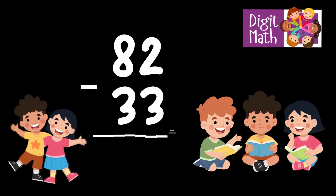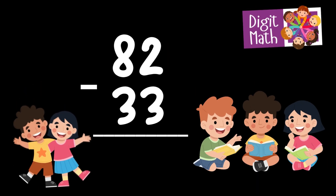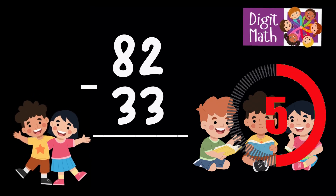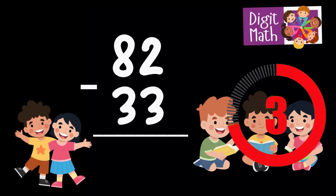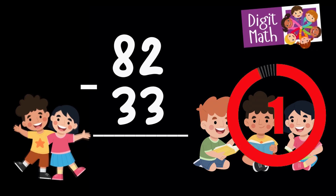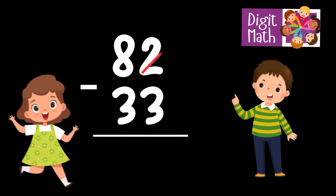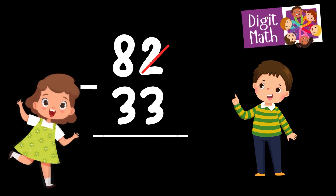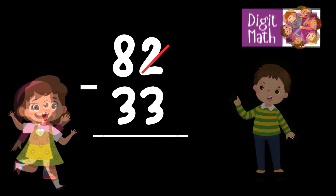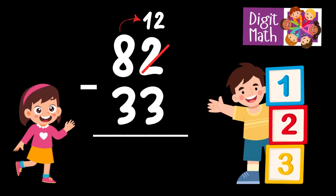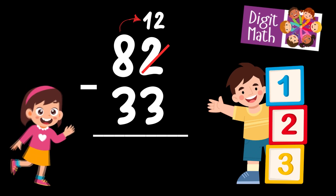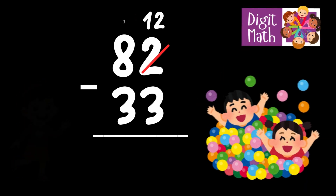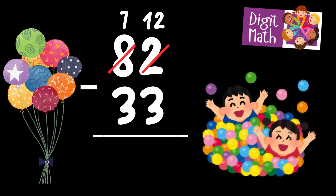82 minus 33 is... Time to think. In the Units column, we have 2 minus 3. Since it's not possible to subtract 3 from 2, we need to borrow from the Tens column. In the Tens column, we have 8. We take 1 from the Tens, leaving 7 in the Tens column and turning the Units column into 12.